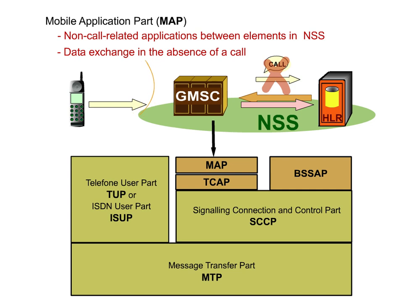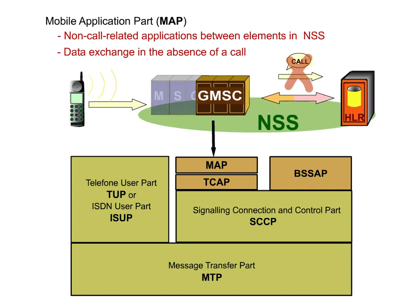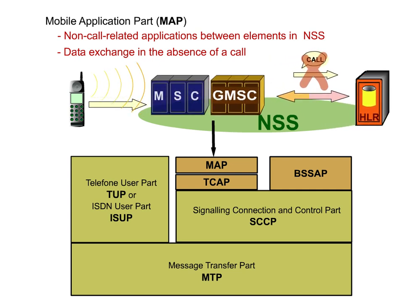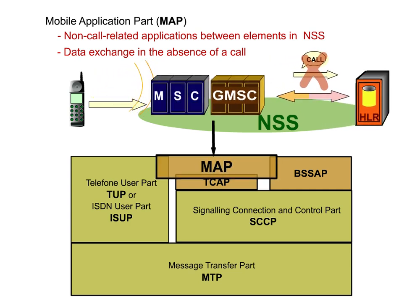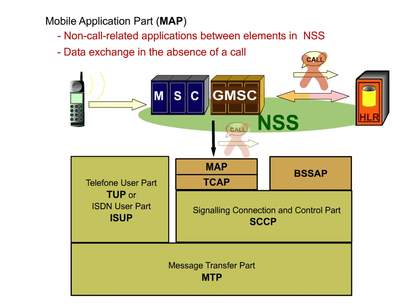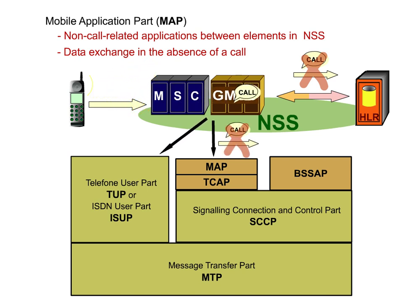Please note: in the MSC-MSC communication, MAP is only used for non-call-related signaling. To forward a call from an MSC to another MSC, TUP or ISUP is used.